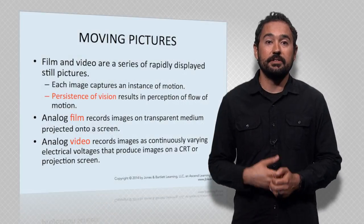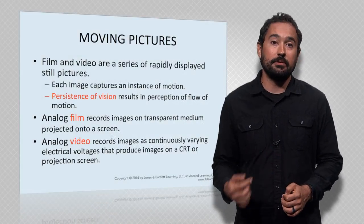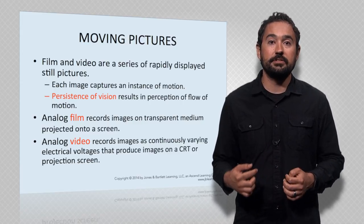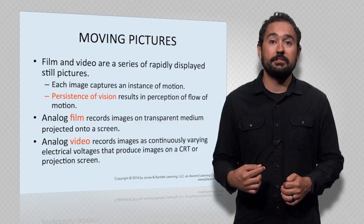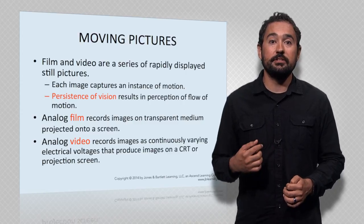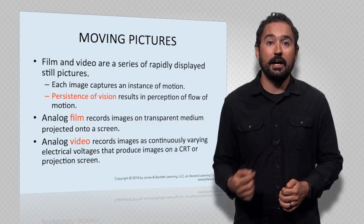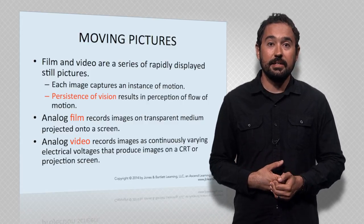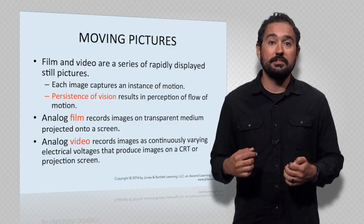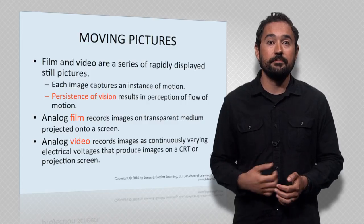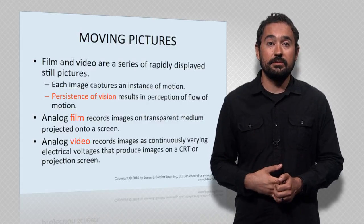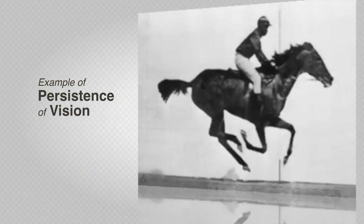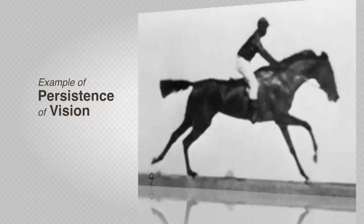Video is composed of a series of rapidly displayed still images to give the perception of movement. Each image captures the instance of motion and creates persistence of vision, where images form on the retina of the human eye and remain for a short period of time. Thus, as the image moves, the human eye stitches them together to form the video. In the past, this was achieved via film strips and a projector — for example, one of the first original movies of a horse running.